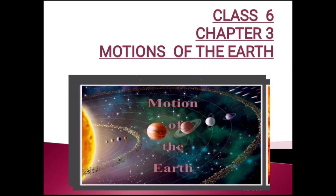Good morning students. Today I am going to explain the third chapter of geography of class 6th, and the name of the chapter is 'Motions of the Earth.' Before starting the chapter, let's discuss a few natural things that happen daily in our life. Every day we notice that the sun rises in the east and sets in the west. We are always conscious of the apparent movement of the sun, but we don't realize that the earth on which we live is constantly in motion.